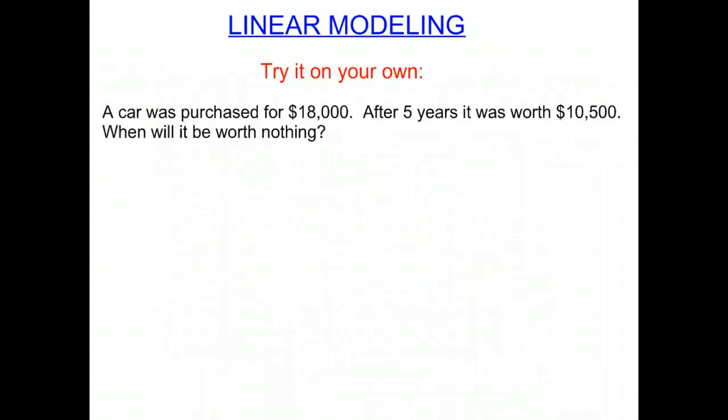So what I'd like you to do is try one on your own. So a car was purchased for $18,000. After five years, it was worth $10,500. When will it be worth nothing? So remember, you need to find your points first. So look at the information and get your two points. Then try to find out what you're trying to find. Are you looking for the X? Are you looking for the Y? What information do you have? Find the equation to use, okay? Make sure you find your slope, then find the equation. And then you can solve for what you're looking for. Good luck.